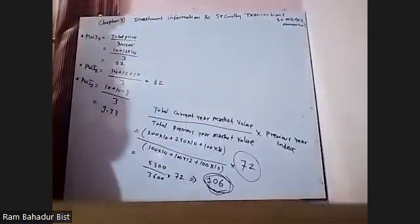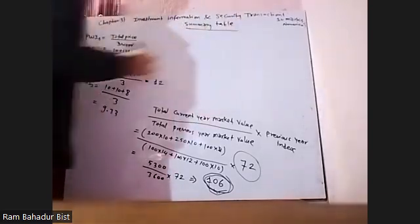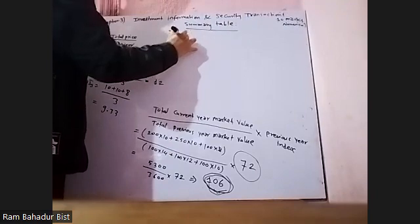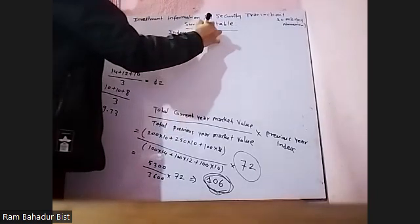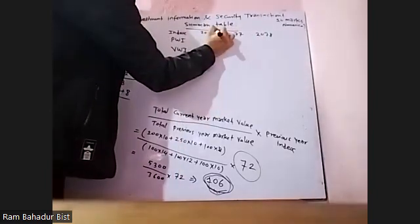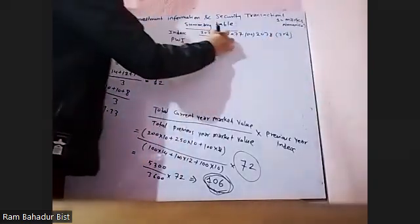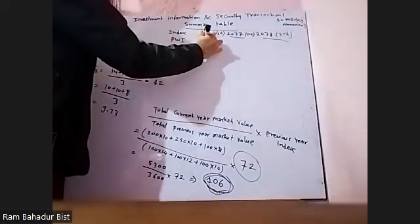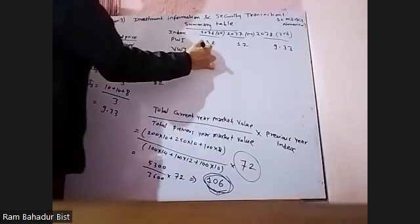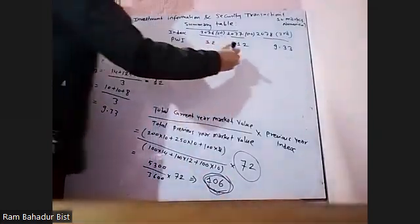As you can also get the ER index. Third error: 1, 2, 3. Price-weighted index: 9.33. And the value-weighted index.